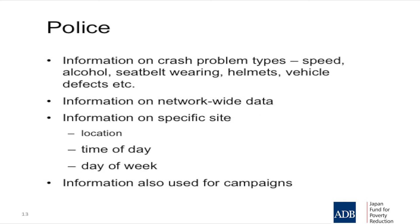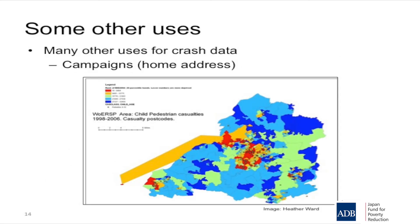Information can also come from a specific location — if there is a speed crash problem on a certain route, enforcement can be conducted there. Another use of this information is shown in a map of child pedestrian crashes in one city. Rather than showing the crash location, it shows where the children live, with red indicating areas where high numbers of children involved in crashes actually come from. This allows campaigns to be conducted in schools in those areas, even if the crashes happened elsewhere. The address details come from the crash data.